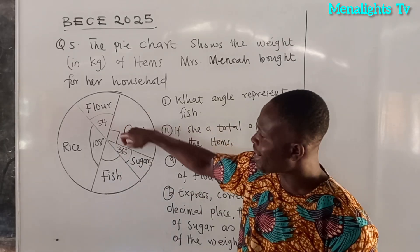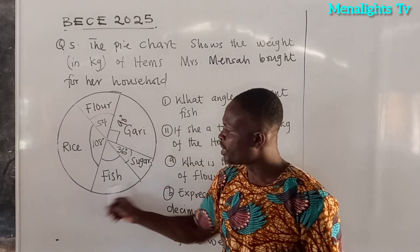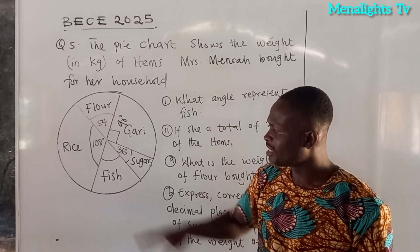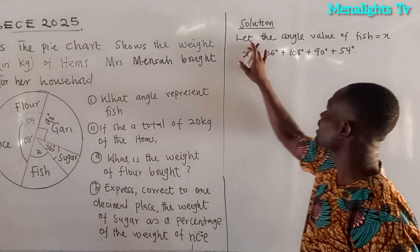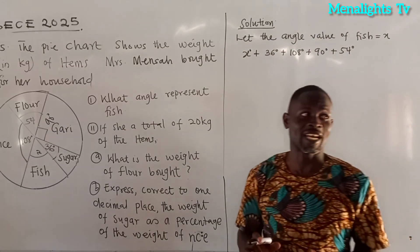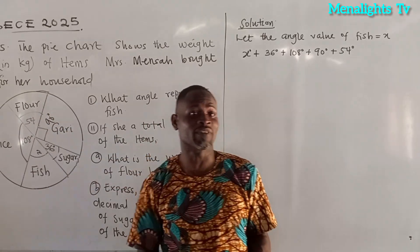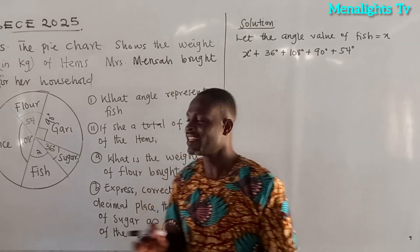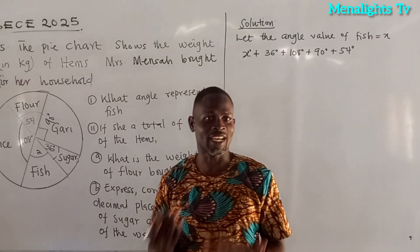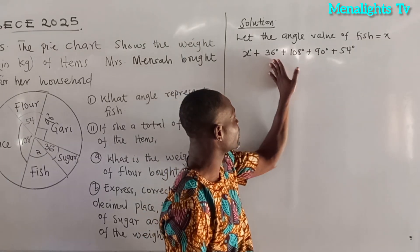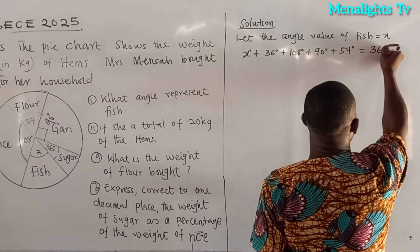When you look at garlic, this is the right angle — the angle at garlic is 90 degrees. So if garlic is 90, we need to find the value of the angle at fish. We let that angle be equal to x. Since the sum of angles in a circle is 360 degrees, we have: x + 36 + 108 + 90 + 54 = 360 degrees.